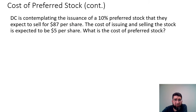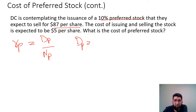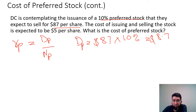Let's look at an example. DC is contemplating the issuance of a 10% preferred stock that they expect to sell for $87 per share. The cost of preferred stock equals dividend divided by net proceeds. The dividend is $87 multiplied by 10%, which gives us a dividend of $8.70 per share.